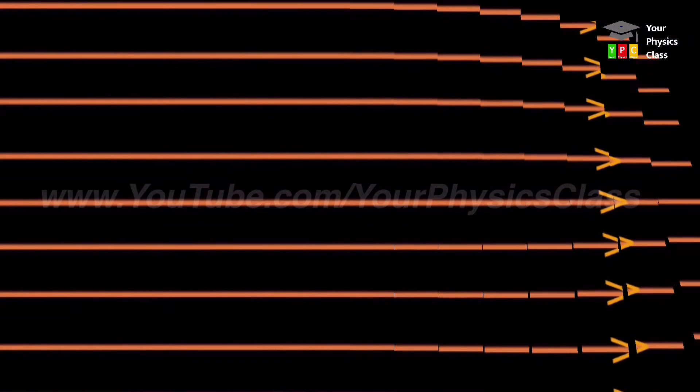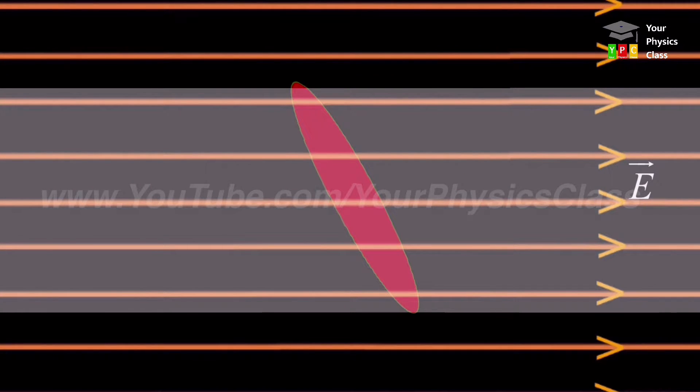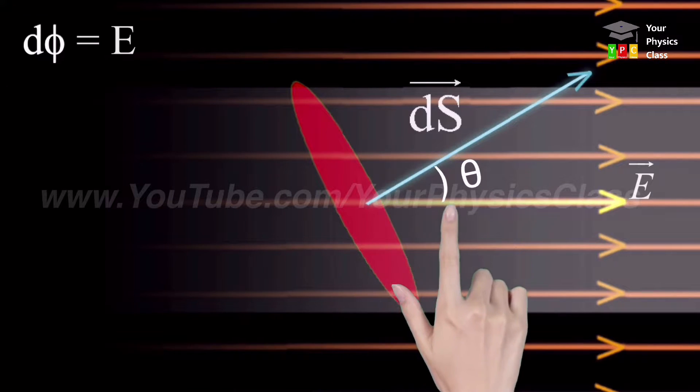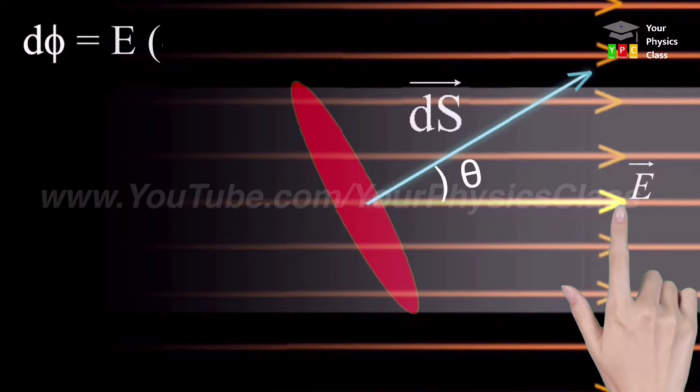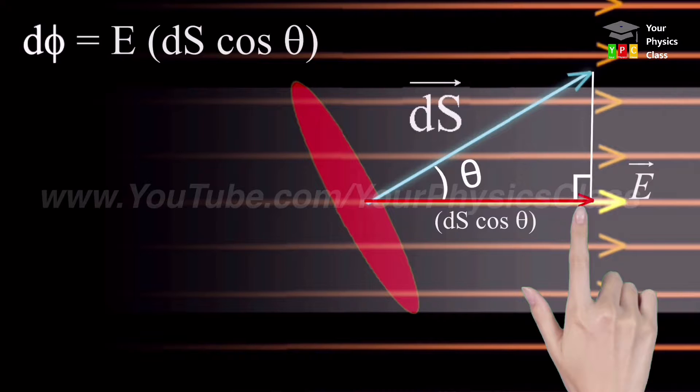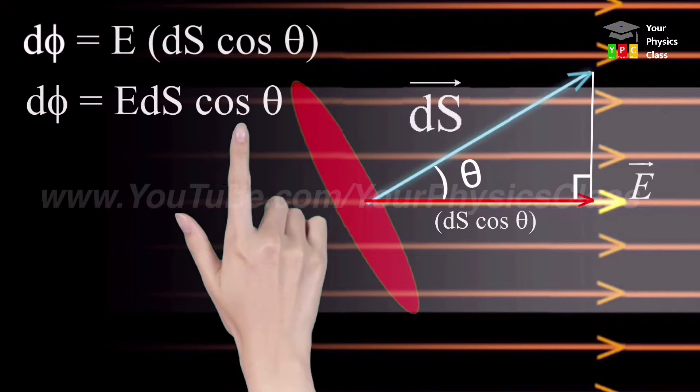But what happens if we rotate dS through angle theta? Then electric flux passing through area dS is given by electric flux d-phi equals electric field intensity into component of area vector dS along the direction of electric field intensity E. Here we get d-phi equals E dS cos theta.